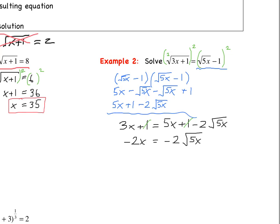We divide both sides by negative 2, leaving us with x equals the square root of 5x. Now we are completely isolated and ready to raise both sides equal to the index, which is 2. We raise both sides to the second power. The left side becomes x squared, and the radical on the right side goes away, leaving us with 5x.